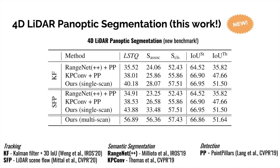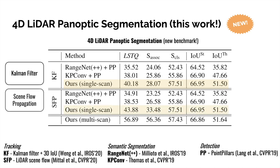In terms of tracking, the most established approach is tracking-by-detection, where the idea is to detect or segment objects individually in scans and associate them over time. We evaluate two variants of this baseline. In the first, we use a Kalman filter-based multi-object tracking method to associate instances obtained per scan with our single-scan variant. In the second variant, we use a pre-trained LiDAR scene flow method to propagate segments from scan to scan.